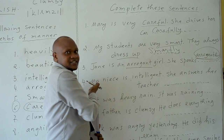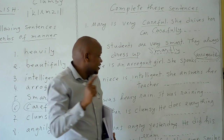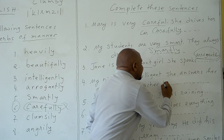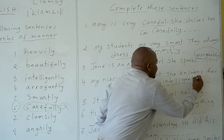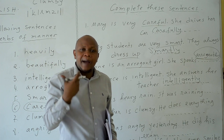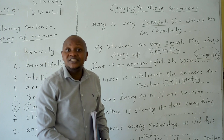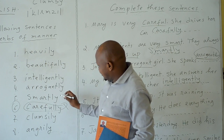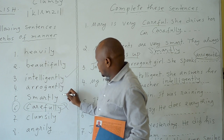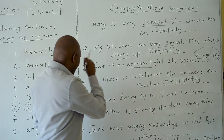The fourth sentence: 'My niece is intelligent. She answers her teacher intelligently.' Because she is intelligent, the correct adverb is intelligently. She answers her teacher intelligently. We have now finished with intelligent, smart, and arrogantly.